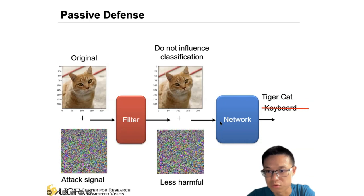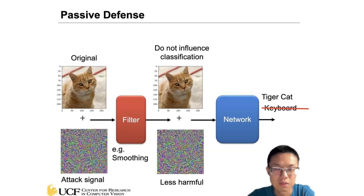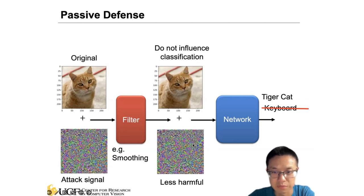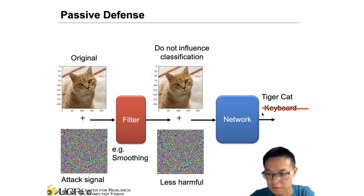If we do this kind of filtering process, the network is able to make correct predictions. The simplest approach is smoothing. By smoothing the image, the noise can also be smoothed out, and the added perturbation may become less harmful because we reduce the strength of the noise. For example, after smoothing, a model that was predicting 'keyboard' with 98% confidence instead correctly predicts 'tiger cat' with 37% confidence — still the highest confidence class, so the model makes the correct prediction.